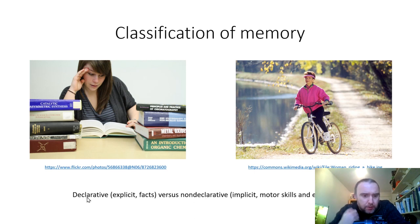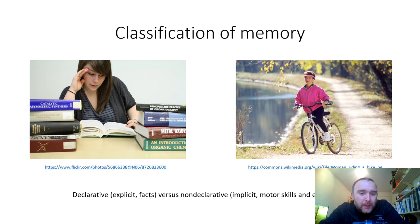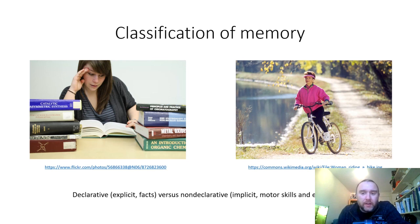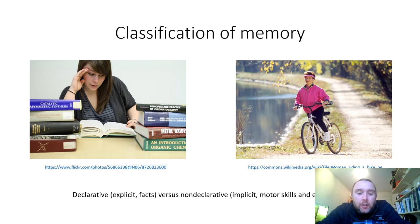Declarative memories, otherwise known as explicit memories or memories for facts, are the kinds of memories that medical students are very familiar with — using declarative memory to learn explicit facts. Conversely, non-declarative or implicit memory relates to motor skills or emotions. It's said you never forget how to ride a bike — that's recalling implicit memories. Another example is juggling.